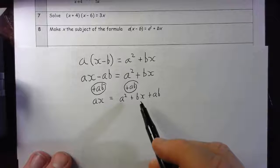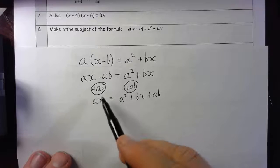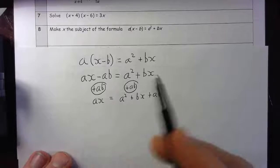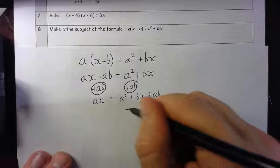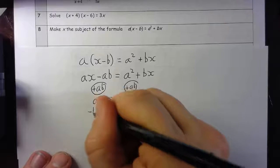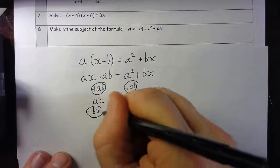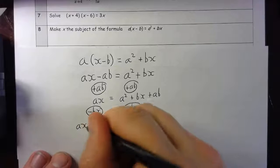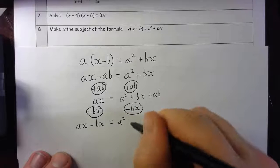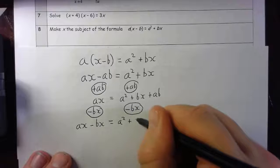And if I take away bx from both sides then I'll get my terms with x on one side and everything else on the other which is what I want. So take away bx on both sides. It gives me ax - bx equals a² + ab.